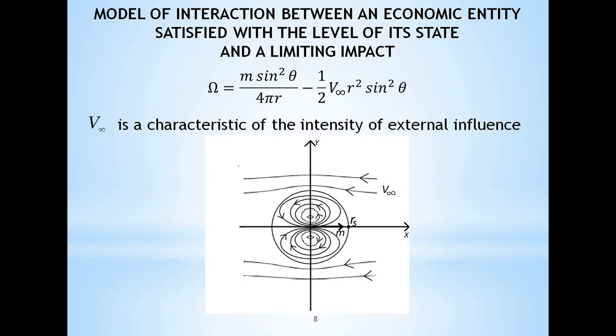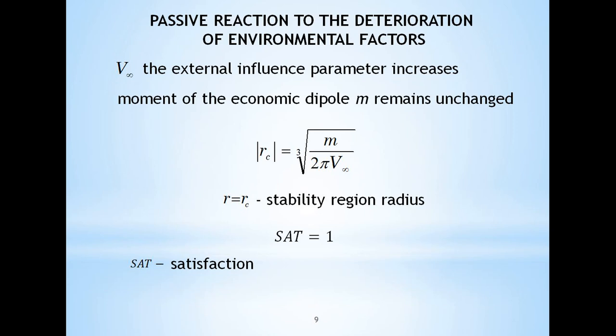The interaction model of an economic entity satisfied with the level of its state and a limiting external influence is represented by a linear combination of the economic dipole flow function and the external influence flow function. In addition, the purpose and result of such interaction is to establish a balance corresponding to the sustainable development of the system as a whole. The inner region, which is formed by the flow of the economic dipole, will be called the region of stability. Its size is difficult to give a clear qualitative and quantitative characteristic. Consider a situation where the negative impact of environmental factors increases.